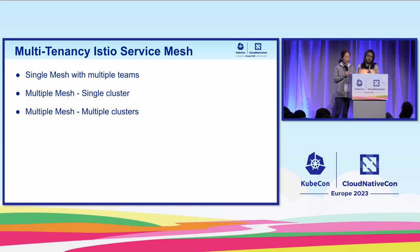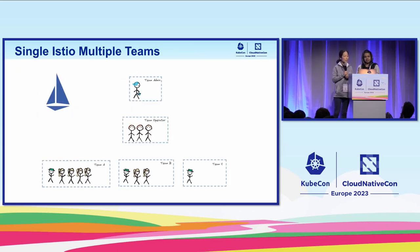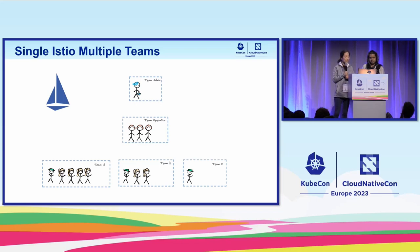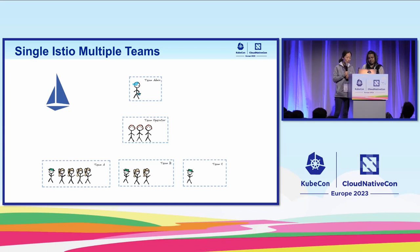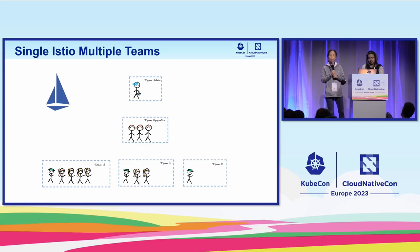We're going to start talking about single mesh with multiple tenancy, multiple teams. This is the most widely deployed multi-tenancy model in the Istio project today — it's also what's in the default. In this vision, you have a single Istio mesh with multiple teams. You probably have different roles in your organization: team admin, operator, and each individual team producing their services. The teams are typically a service producer or service consumer, depending on which role they are serving.